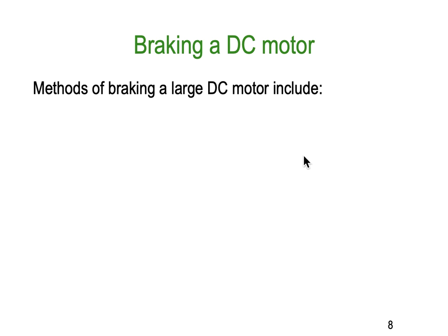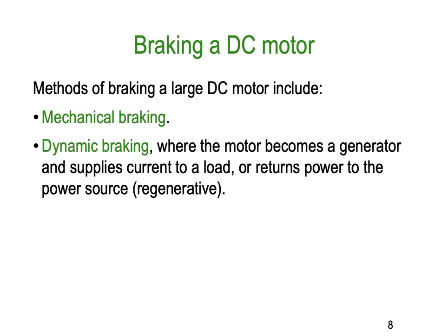Once our motor is up and started, what about slowing it down? We can use mechanical braking — a physical brake with a big drum and brake shoes. We can use dynamic braking, where the motor becomes a generator and supplies current to a load, or returns power back to the source — and we give that the special name regenerative braking. Dynamic braking has two components: generating back into load resistors, or regenerating back into the supply.